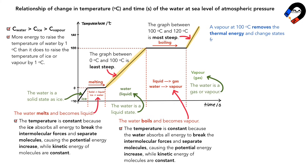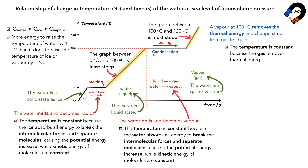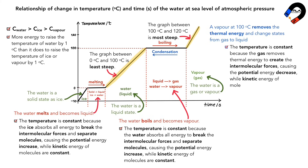In the reverse process, when vapor at 100 Celsius removes thermal energy and changes state from gas to liquid, this is called condensation. At condensation, the temperature is constant because the gas removes thermal energy to create intermolecular forces, causing the potential energy to decrease while the kinetic energy of molecules remains constant.